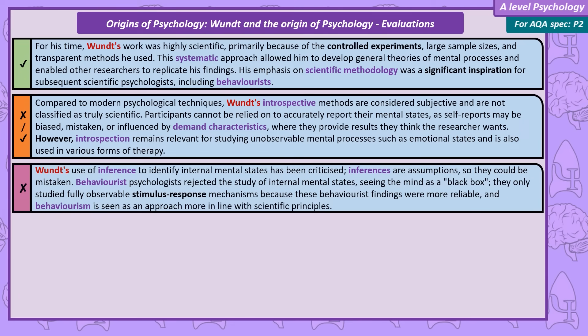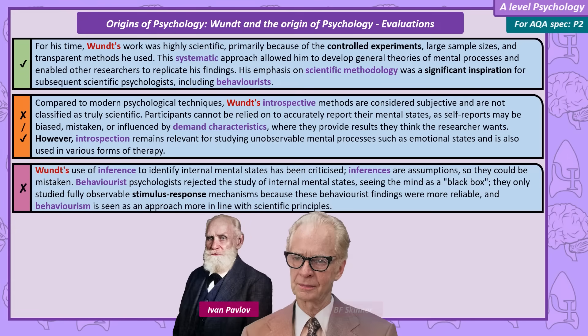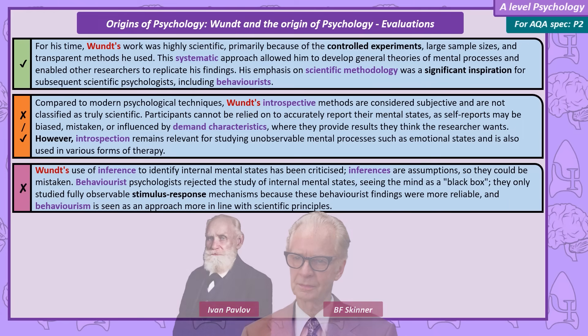Wundt's work is also not fully scientific because of his use of inferences. These inferences are assumptions and could be mistaken. This criticism led to later psychologists — the behaviourists — completely ignoring the study of internal mental states and focusing only on fully observable stimulus-response mechanisms. Because of this, the behaviourist findings were more reliable, and behaviourism is seen as an approach that's more in line with scientific principles.